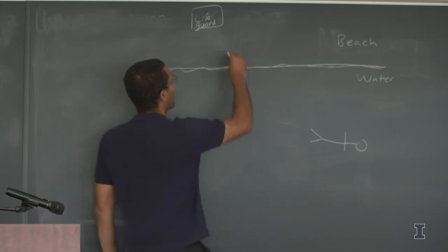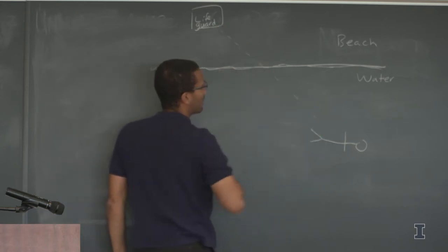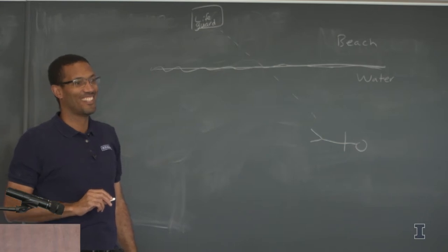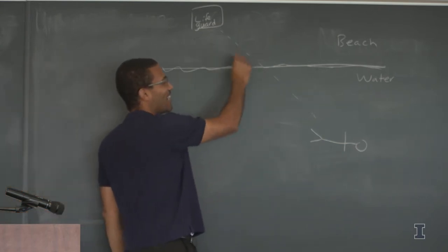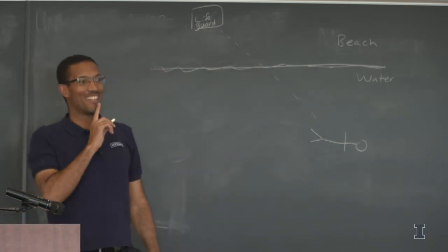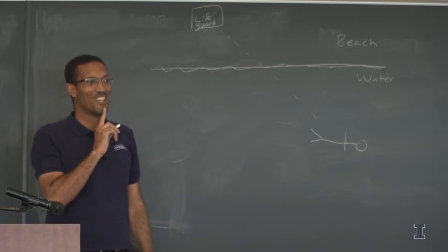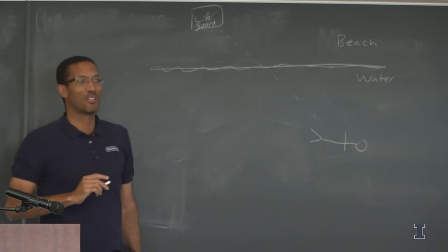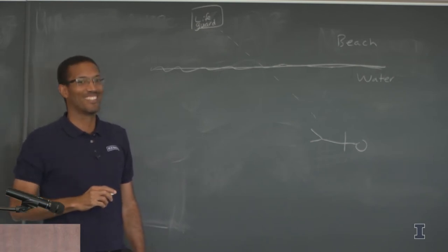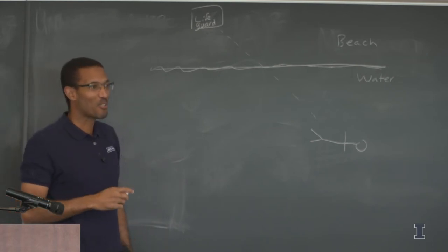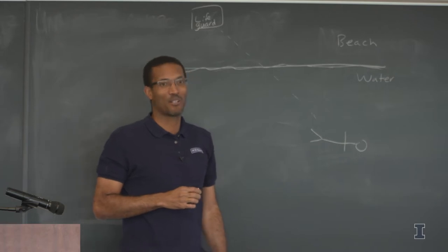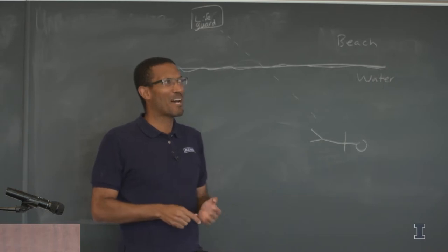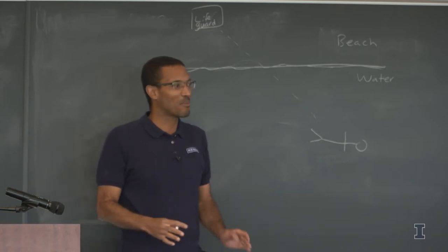How many people would go in a straight line? The fastest path is through a straight line, right? Well, this is the shortest distance — but is it the fastest? You travel faster on land than in water.